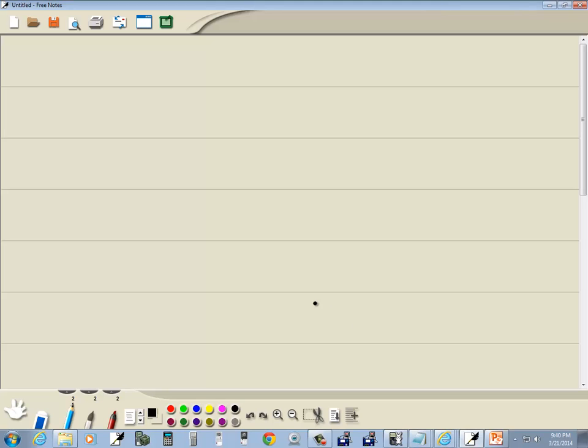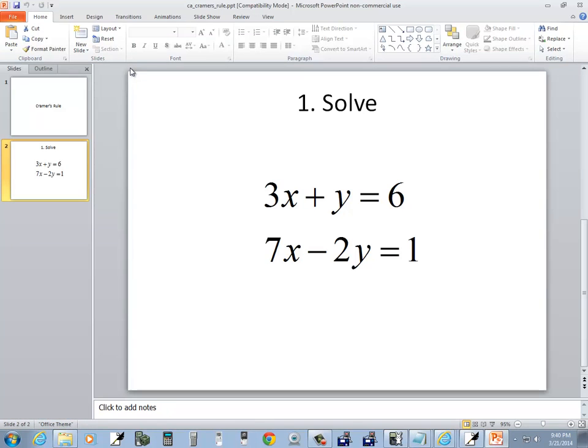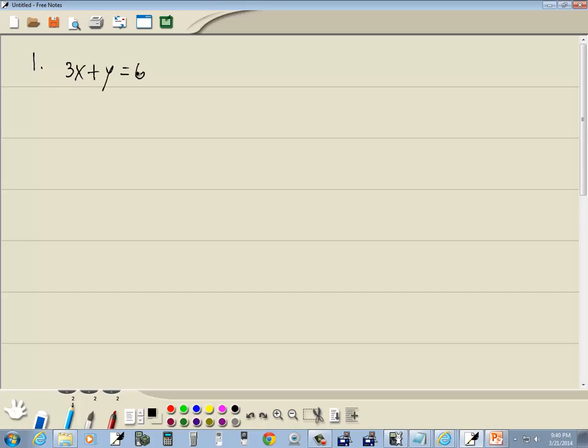Because we know with a simple one like this, you could just do it by hand anyway. The true benefit is when you've got something more complex. We've got 3x plus y equals 6, and 7x minus 2y equals 1.